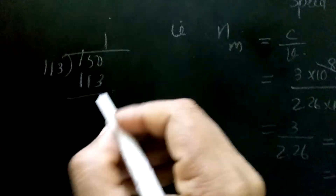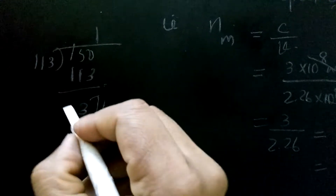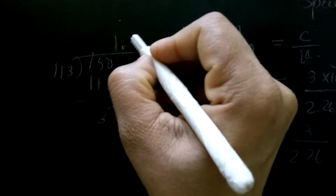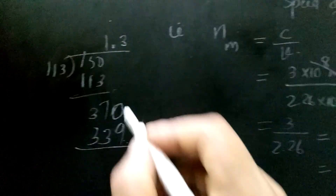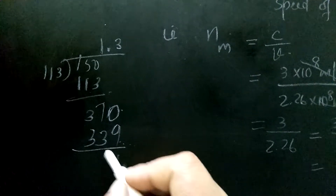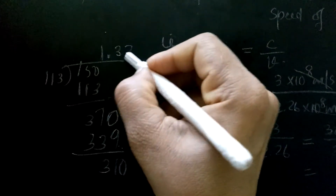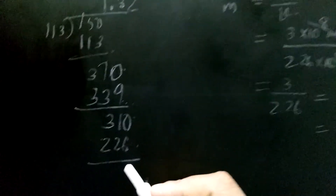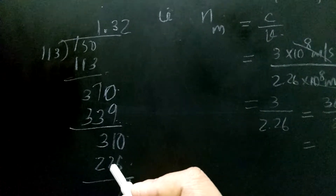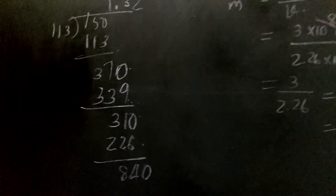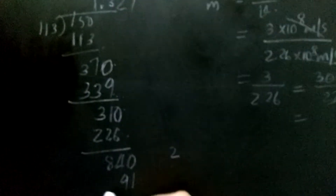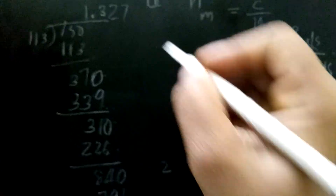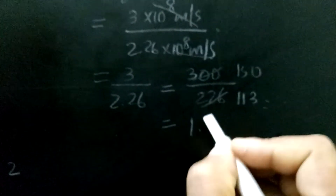Now we divide 150 by 113. 113 goes into 150 one time. We place the decimal and continue dividing. Working through the long division, we get approximately 1.327, which we round to 1.33.